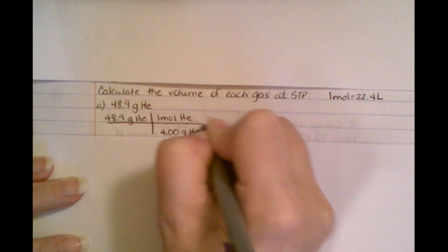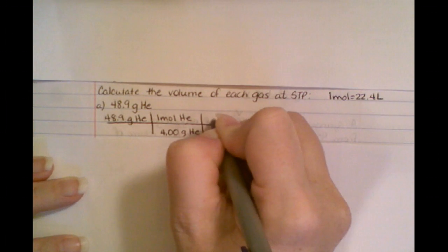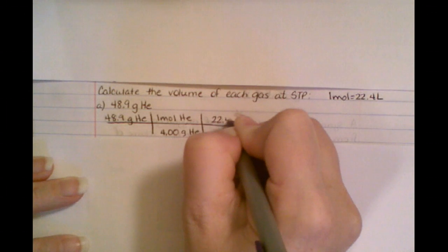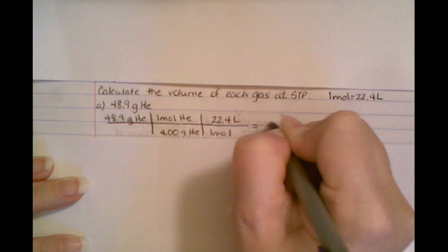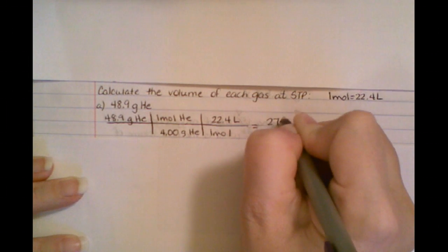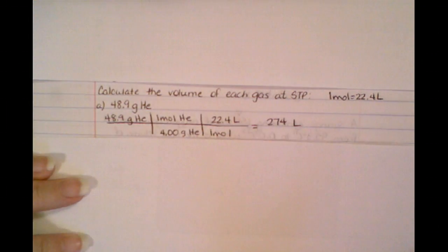But I don't need grams. I need volume. So that's where you're going to use this, 22.4 liters in every one mole. You do the handy-dandy calculation. You get 274 liters with the correct number of significant figures.